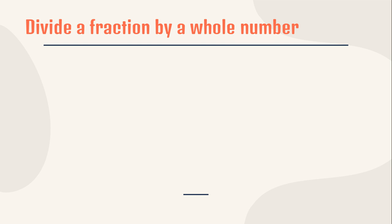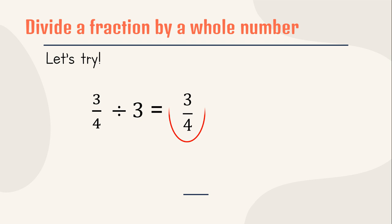But what does it mean? We have three out of four divided by three. This is a fraction, this is a whole number — that's why it is called dividing a fraction by a whole number. Remember the first step: Keep. This is what we call Keep — look at here. This is three out of four, and it is the same: three out of four. We will keep it. If this is seven out of eight, or nine out of ten, or eleven out of one hundred, it is the same — because that's why we call it Keep.